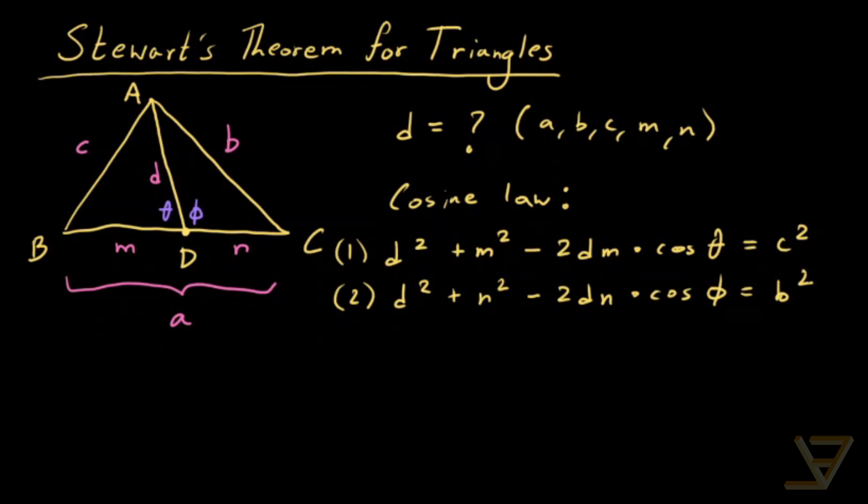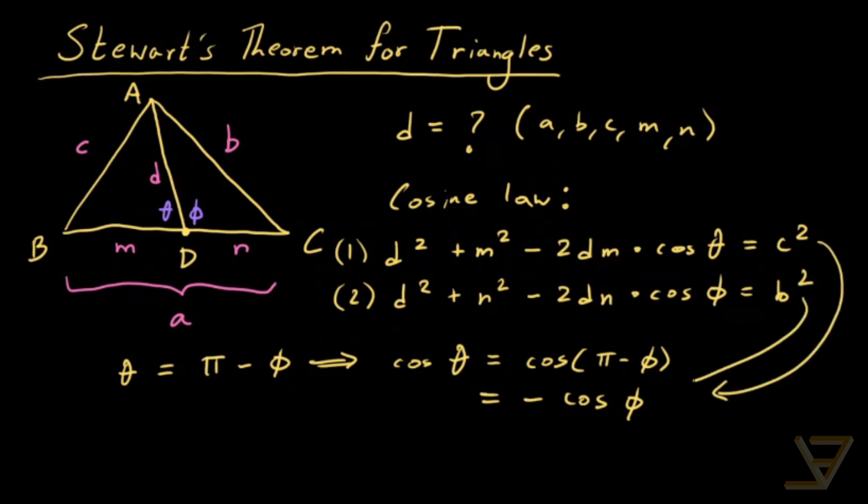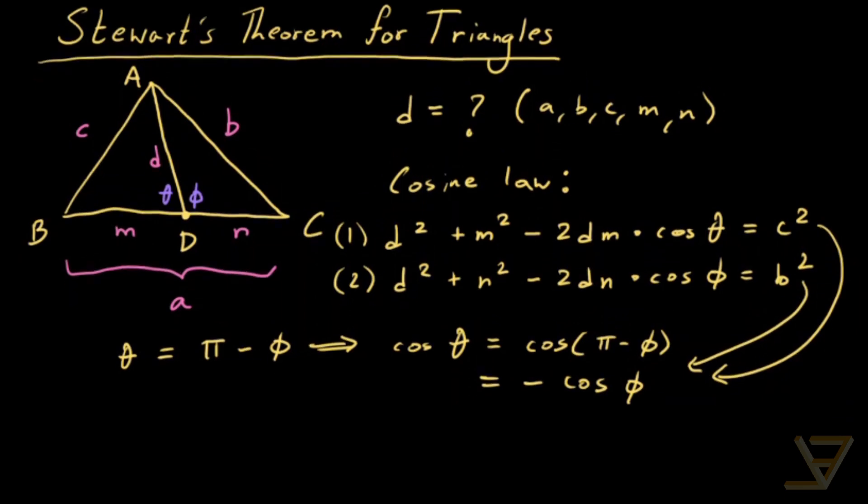And now what we're going to do is we're going to use the fact that theta is equal to pi or 180 degrees minus phi. So that means the cosine of theta is equal to the cosine of pi minus phi, which is equal to negative cosine of phi. So now we can substitute in these formulas that we have derived in terms of the cosine law. So let's do that.